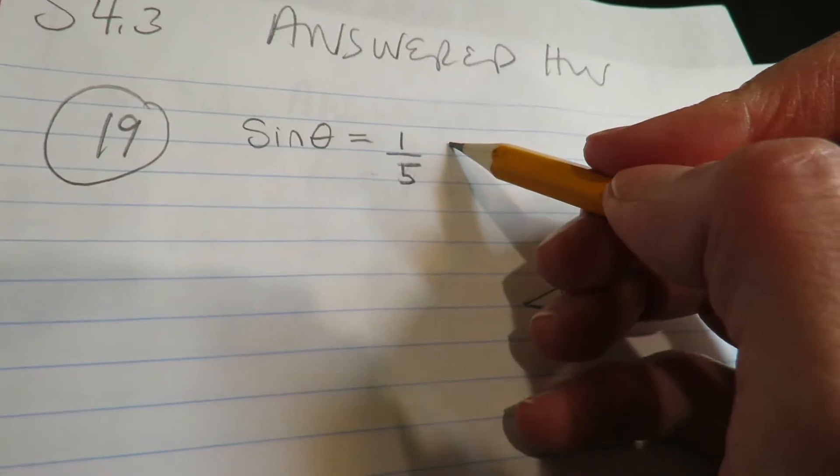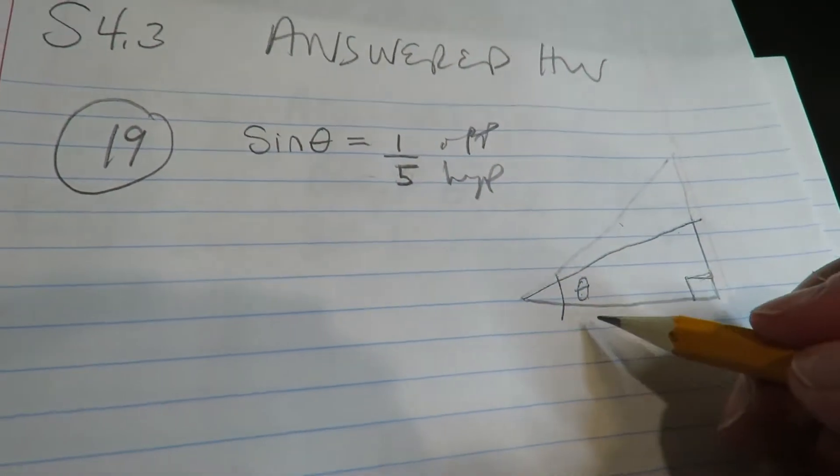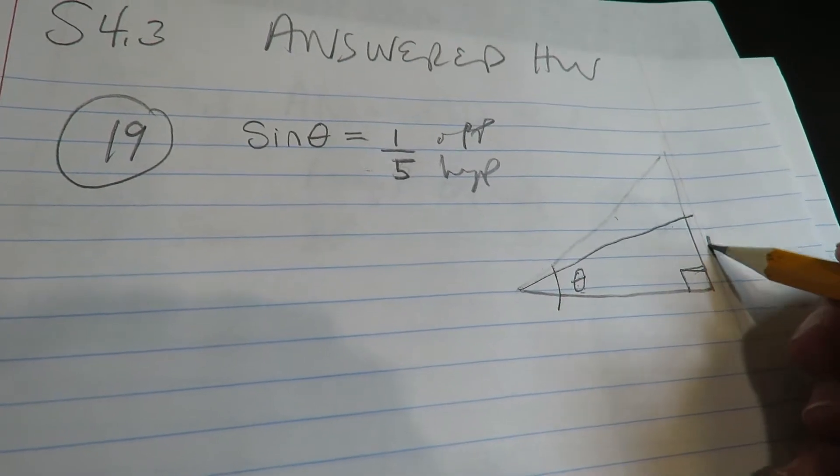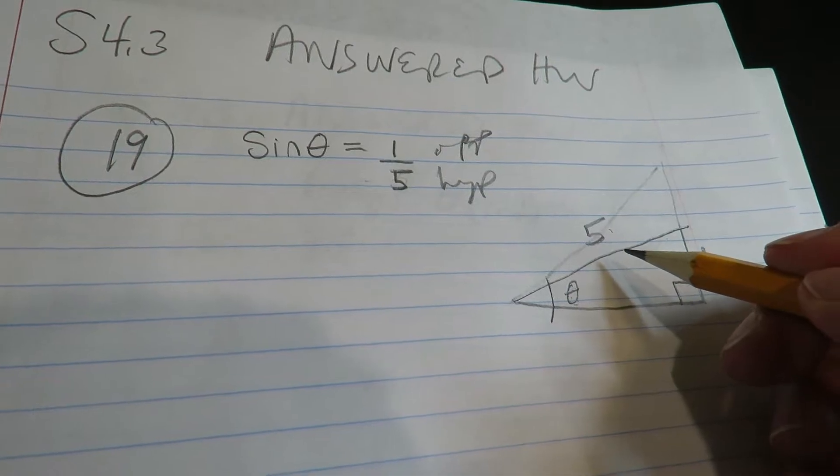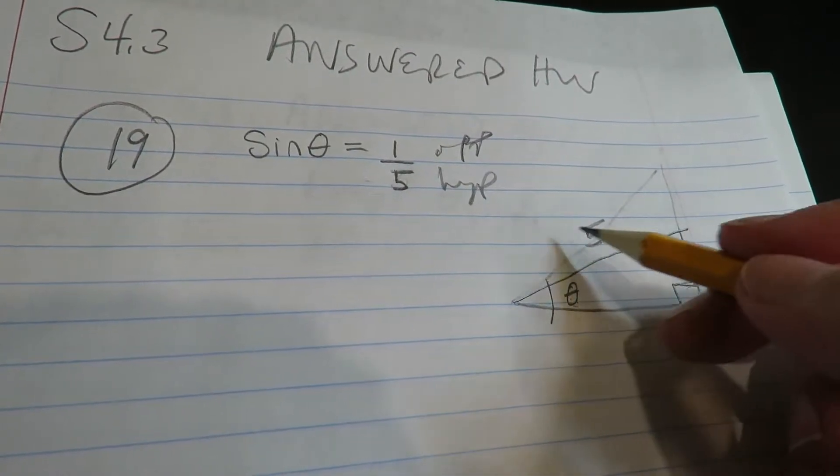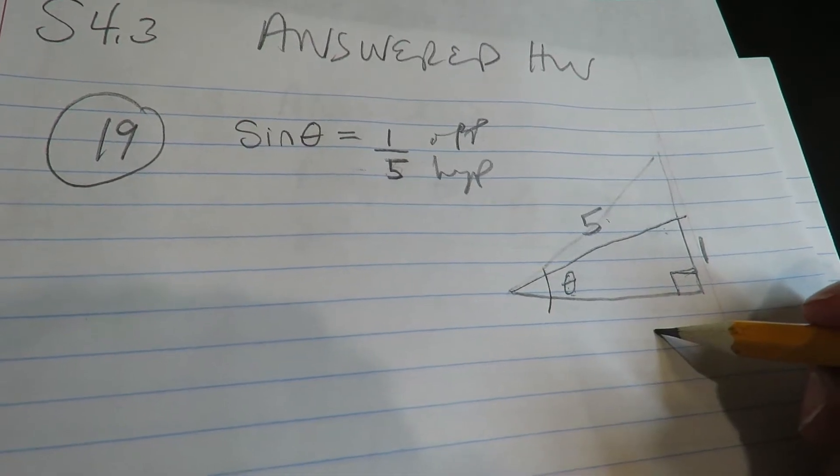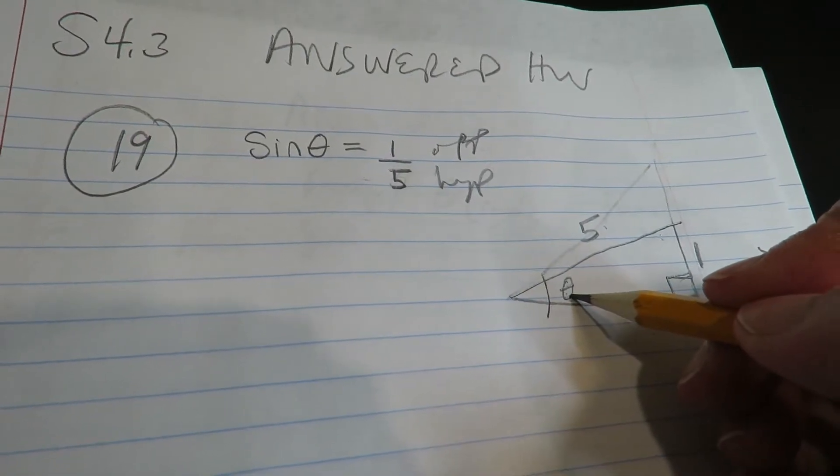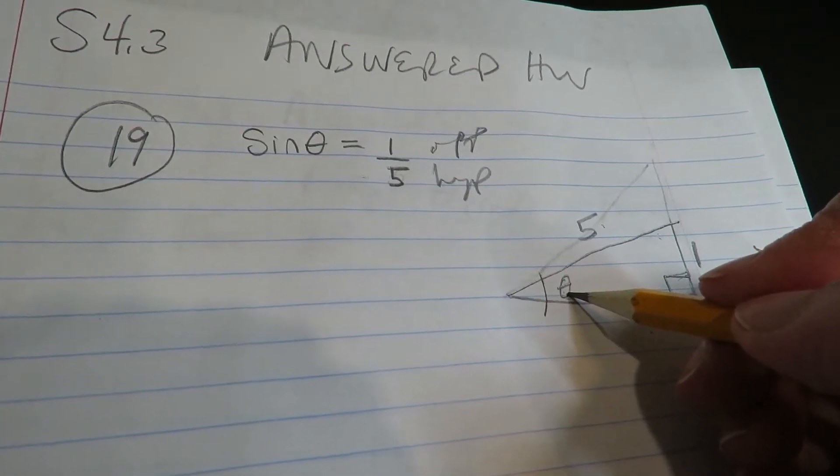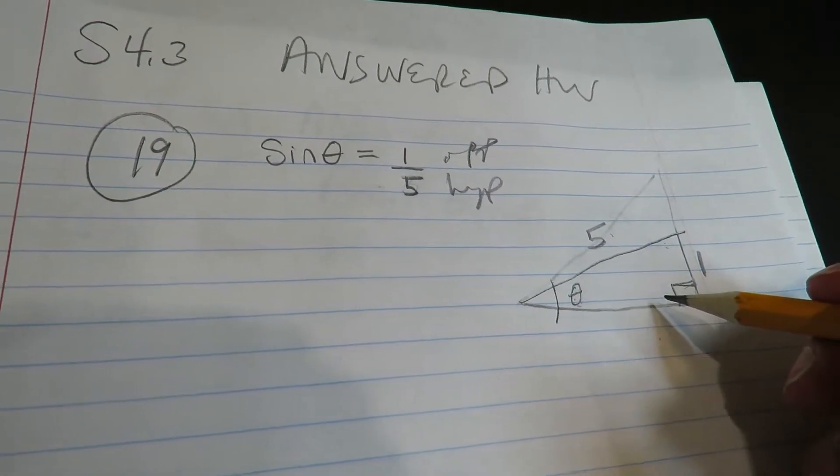So the sine of theta refers to the opposite over the hypotenuse. So if I choose theta here, this would be the opposite side, this would be the hypotenuse. Remember, the hypotenuse is always across from the 90-degree angle. If I had chosen theta to be here, this would have been my opposite side. I would have put the 1 here and then put the 5 here. So you have to decide where your theta is, and then everything falls or clicks into place after that.